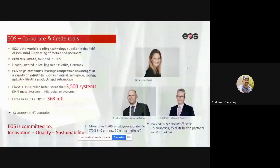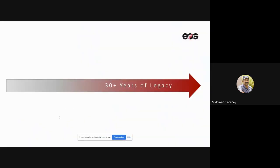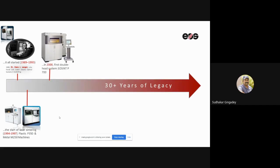A few slides about EOS: we started in 1989 with over 30 years of experience, headquartered in Munich, Germany, and present in almost 67 countries. In 1989–93, founder Hans Langer started with a stereolithography machine. Then in 1994–97 they came up with laser-based machines and the first plastic and metal machines.